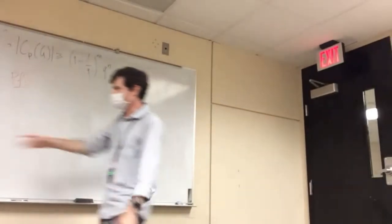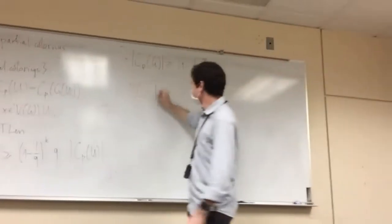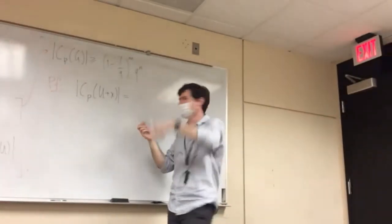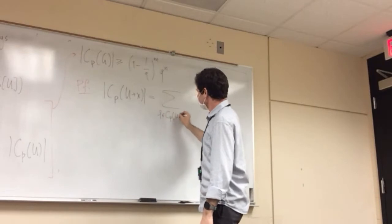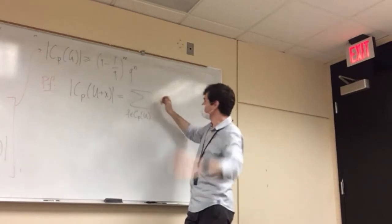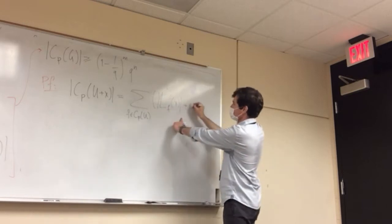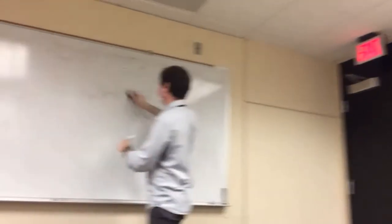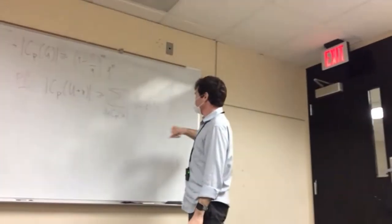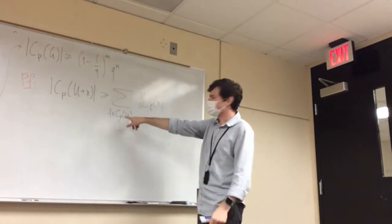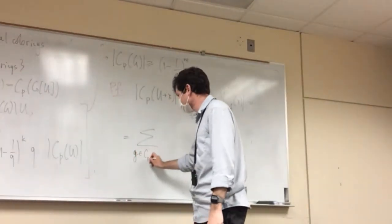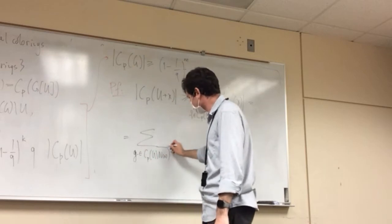Let me sketch how we prove this lemma. We want to count colorings on U ∪ {x}. First color U, then color x. For every coloring f of U only, the number of ways to color x — it must take one of the available colors or be blank — is at least |L_f(x)|. So the total count is the sum over all colorings f of U of |L_f(x)|, which is at least |L_f(x)| for each f.